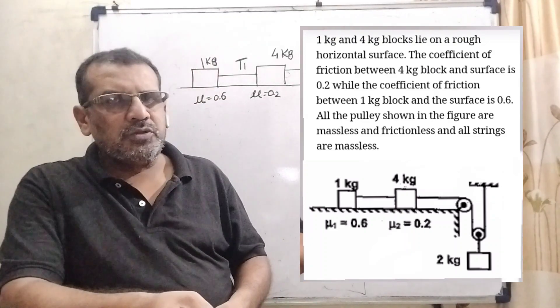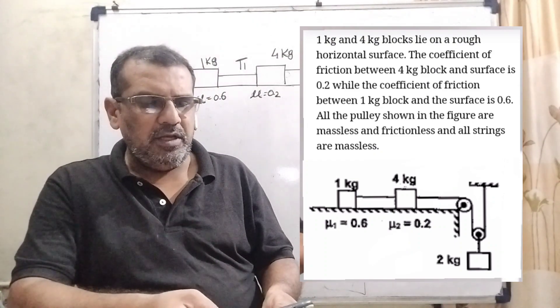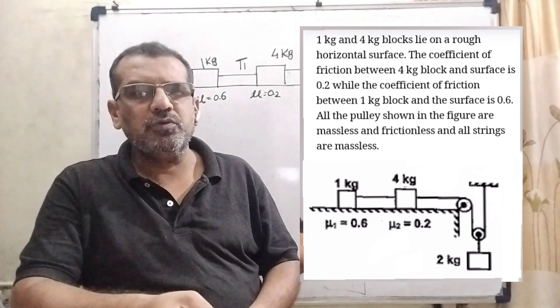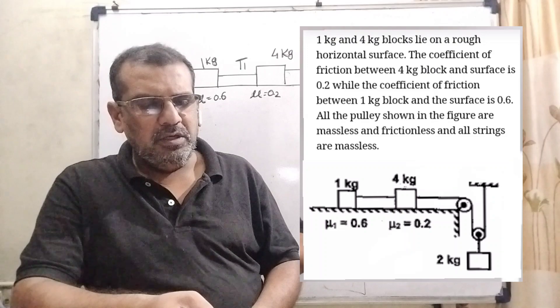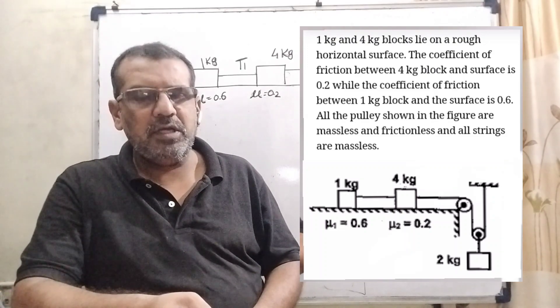Here, multiple choice question. So please listen carefully. Option first, A: The frictional force acting on 1 kilogram block is 2 Newton. Option B: The frictional force acting on 1 kilogram block is 6 Newton.